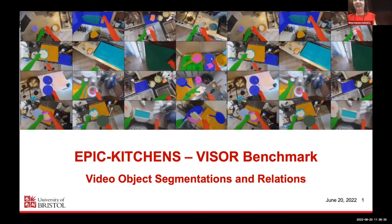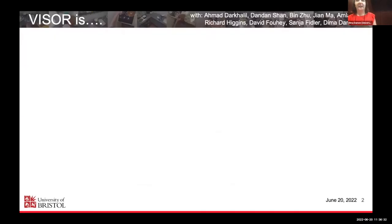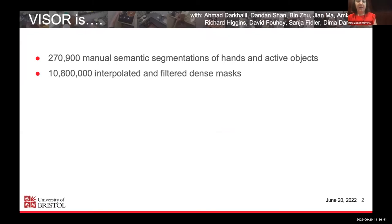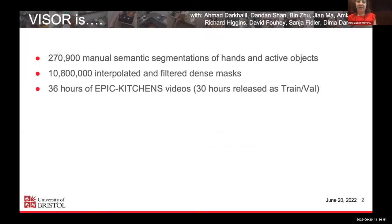The dataset is presented today and will be public before the 1st of August. We have more than 270,000 manually annotated segmentations of hands and active objects. These have also been interpolated into more than 10 million interpolated and filtered dense masks. These cover 36 hours of Epic Kitchens, of which we will be releasing 30 hours for train and validation and keeping six hours for testing.